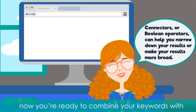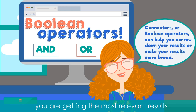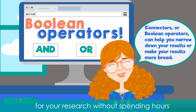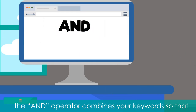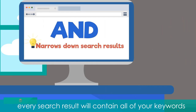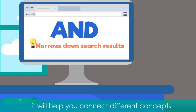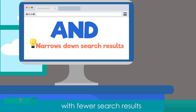Now you're ready to combine keywords with Boolean operators, which will help make sure you are getting the most relevant results for your research without spending hours staring at a computer screen. The AND operator combines your keywords so that every search result will contain all of your keywords. It will help you connect different concepts or ideas together in order to end up with fewer search results.